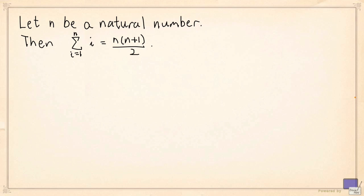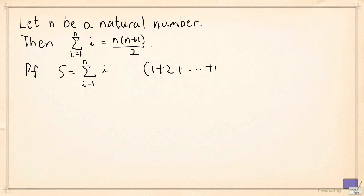What we'll do is as follows. We let s denote the sum on the left hand side, so s is the quantity that we are interested in. But there's another way of writing s. Informally, we can write s as 1 plus 2 and so on plus all the way up to n. But we can reverse the order: n plus n minus 1 and so on down to 1.